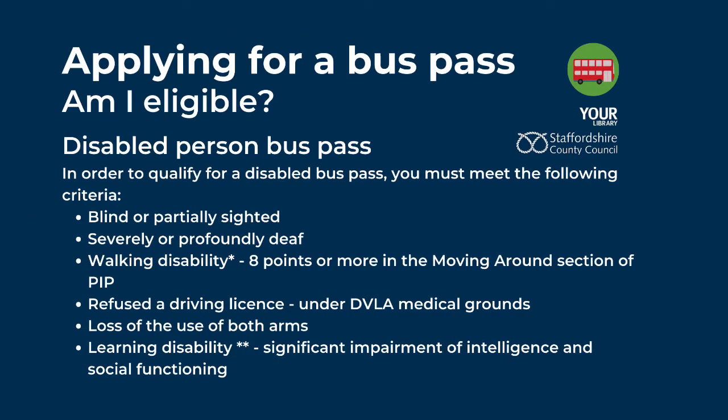Am I eligible? Disabled Person Bus Pass. In order to qualify for a disabled bus pass you must meet the following criteria: be blind or partially sighted; severely or profoundly deaf; have a walking disability with eight or more points in the moving around section of PIP; refused a driving licence under DVLA medical grounds; loss of the use of both arms; or a learning disability with significant impairment of intelligence and social functioning.